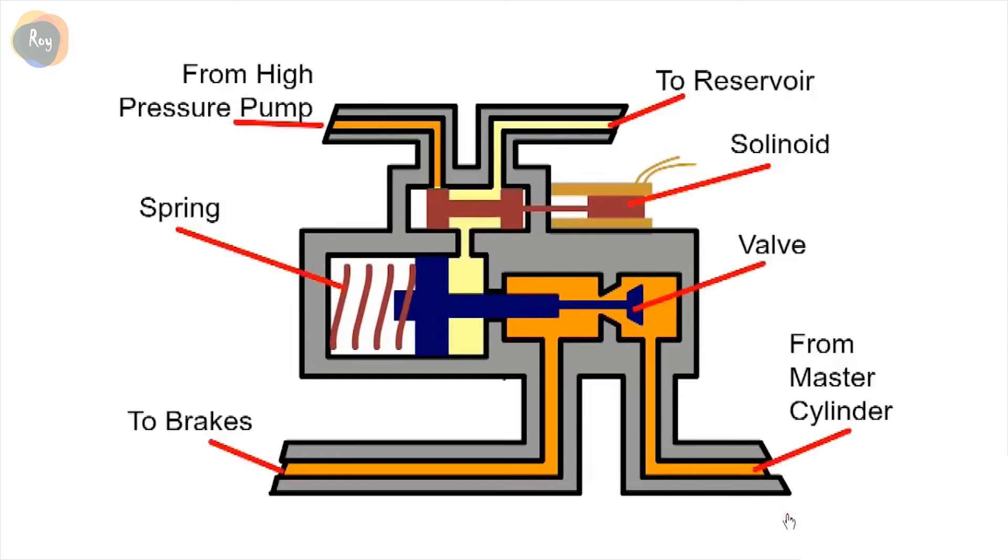The modulating valve is normally in the open position and has no effect on the braking system. At the top left there is a connection to a high pressure pump, and at the top right there is a connection back to the reservoir. Bottom right is the input from the master cylinder, and bottom left is the outlet to the wheel.